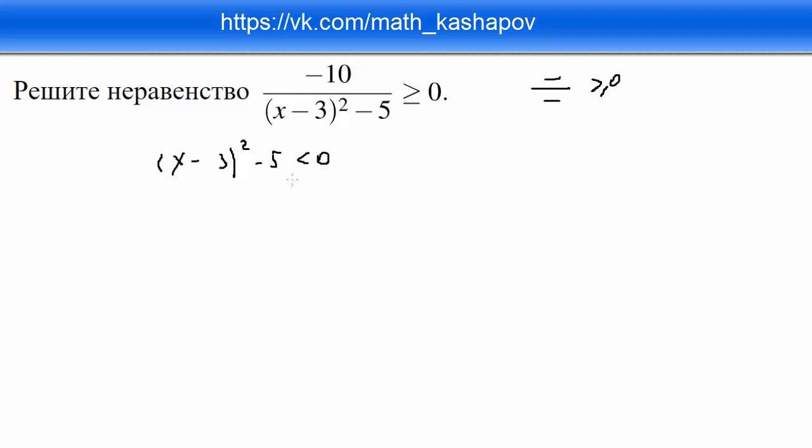Многие из вас будут решать через дискриминант. Я предлагаю один из лучших способов. Мы можем 5 представить в виде корня из 5 в квадрате.